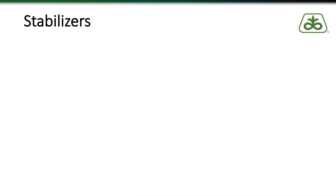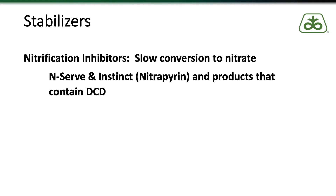Throughout this conversation I've mentioned stabilizers many times, and whether you're working with manure or commercial fertilizer, there are stabilizers that can help ensure nitrogen is available late in the growing season to finish out grain fill. There are two different types. The first is nitrification inhibitors, which slow the conversion of ammonium to nitrate. This keeps nitrogen attached to soil particles — even in flooded conditions, as long as nitrogen is in the ammonium form, you won't lose it. Products like N-Serve and Instinct, which contain the active ingredient nitrapyrin, are very effective nitrification inhibitors, as are products containing DCD.